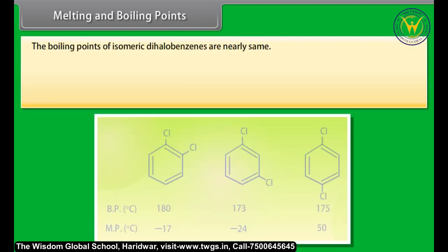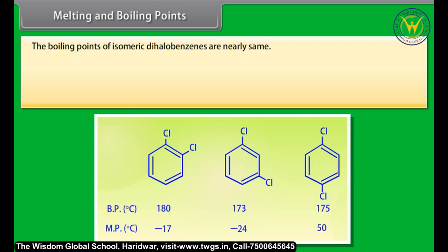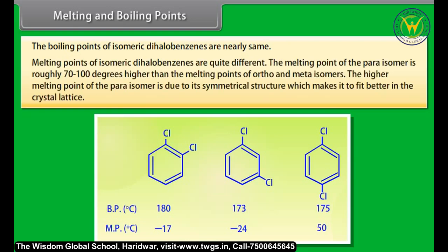The boiling points of isomeric dihalobenzenes are nearly the same. However, the melting points of isomeric dihalobenzenes are quite different — the melting point of the para isomer is roughly 70 to 100 degrees higher than those of the ortho and meta isomers. This higher melting point is due to the symmetrical structure of the para isomer, which allows it to fit better in the crystal lattice.